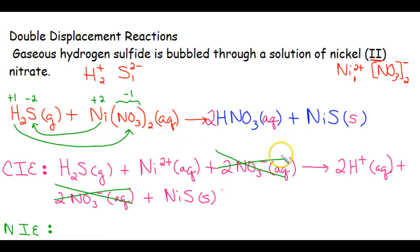So all of the other ions and compounds get to stay. So your net for this reaction is your hydrogen sulfide gas plus nickel ion, which gives you two hydrogen ions and your nickel 2 sulfide product.